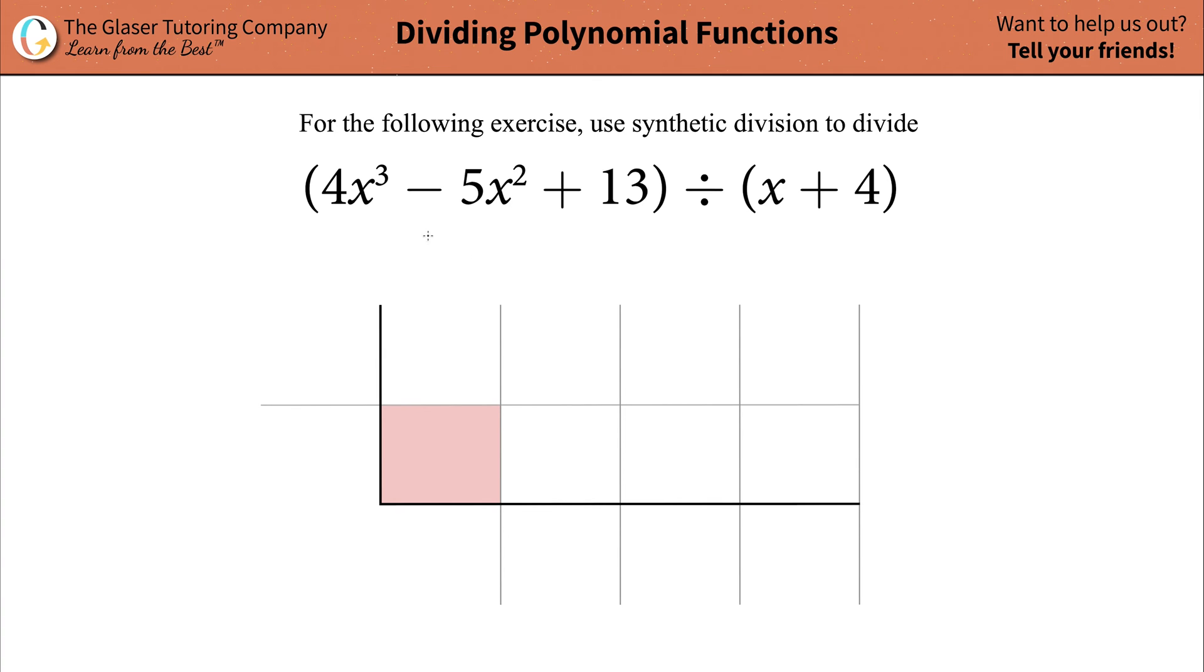So what you want to do is you want to rewrite this and plug in that missing term. Now you might say, how in the world am I going to plug that in? What would it be? Well, anytime you have a missing term, what you're going to do is you're going to add zero, and then whatever x term is missing, you're just going to plug it in at the end. Because what's zero times x? Well, that's just zero. And if this is zero, then that just doesn't exist, and it would simplify back down to the original polynomial function, right?